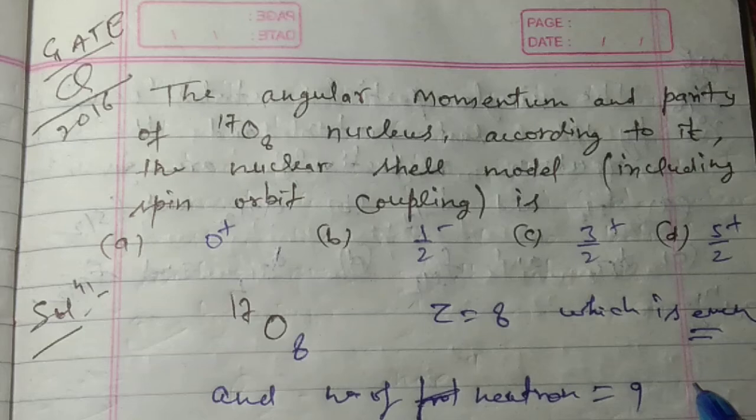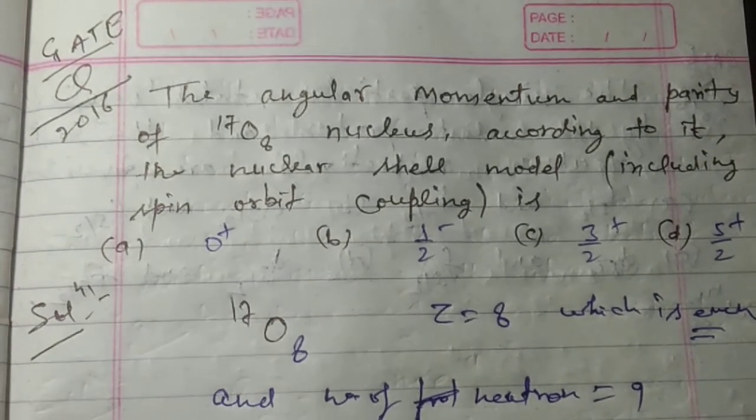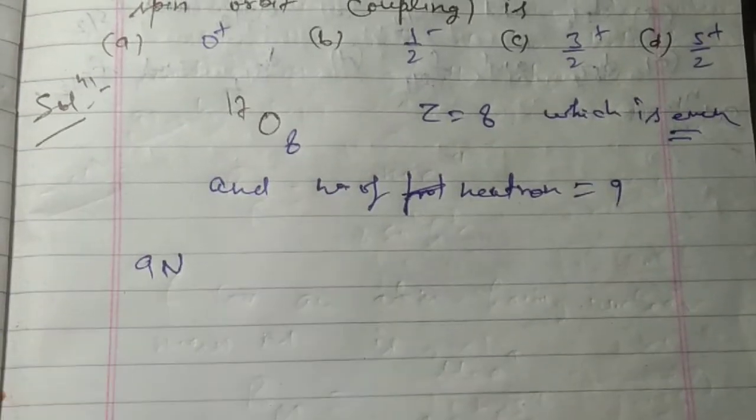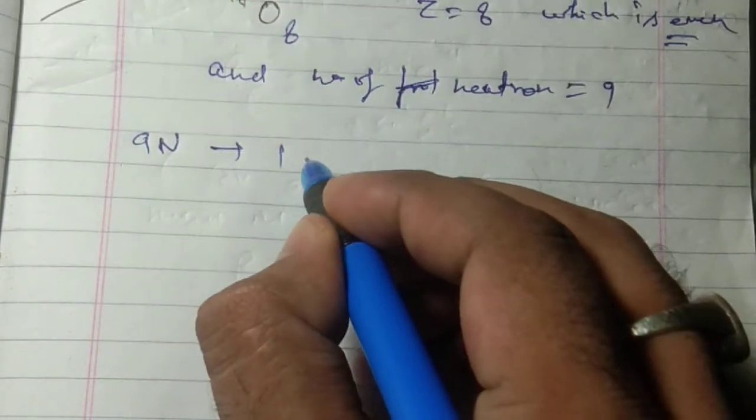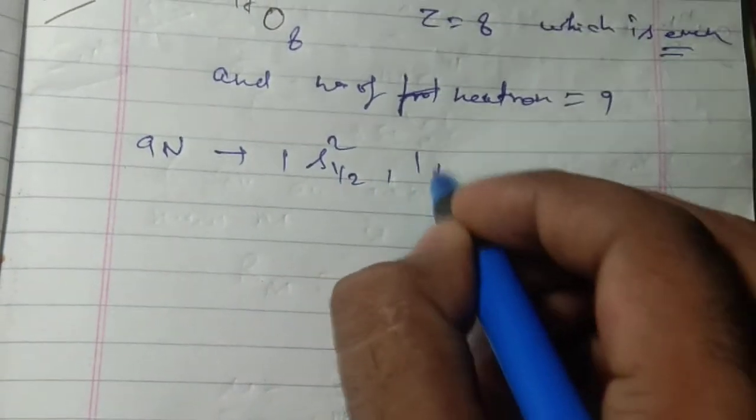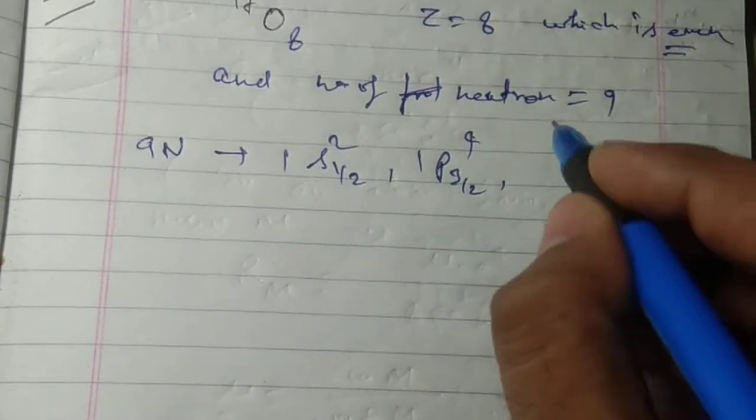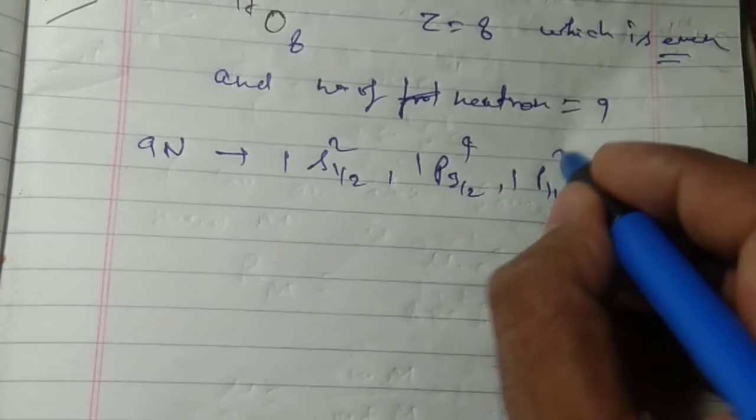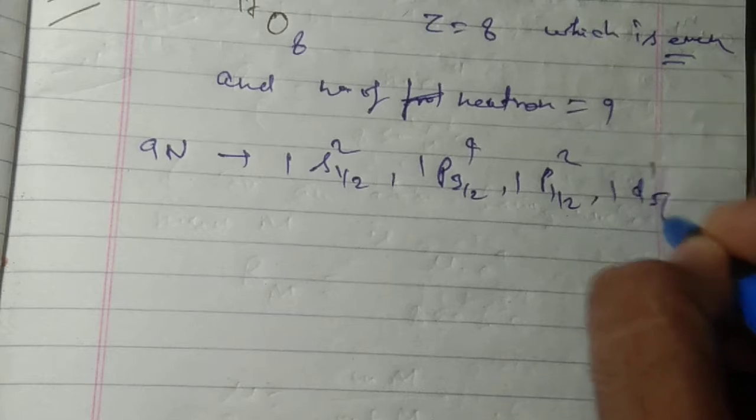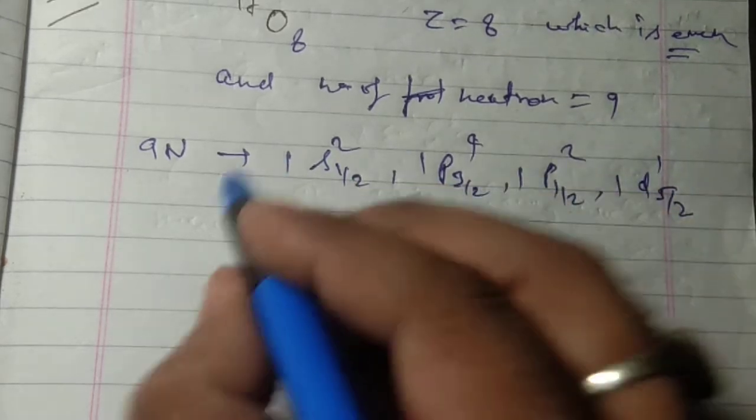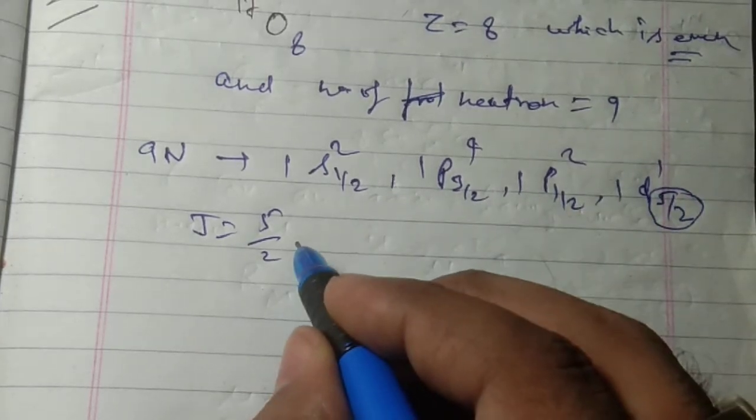The shell configuration is: 1s1/2 has 2, 1p3/2 has 4, 1p1/2 has 2, and 1d5/2. Clearly, j is 5/2. This is j, j equals 5/2.